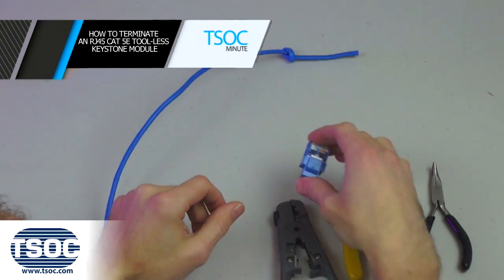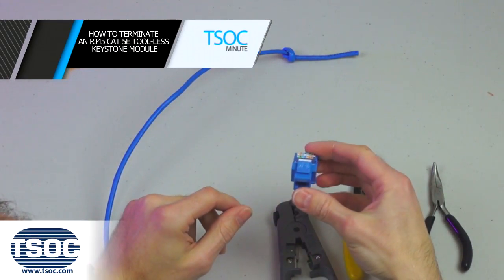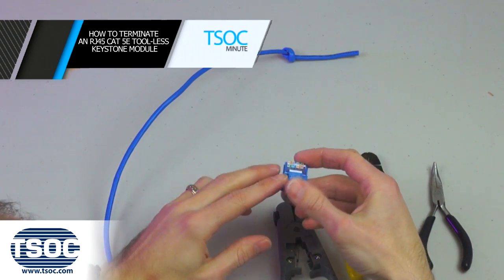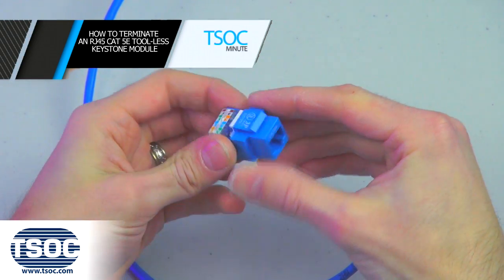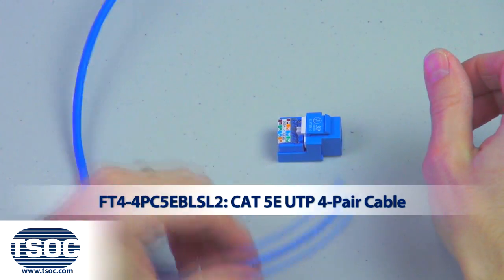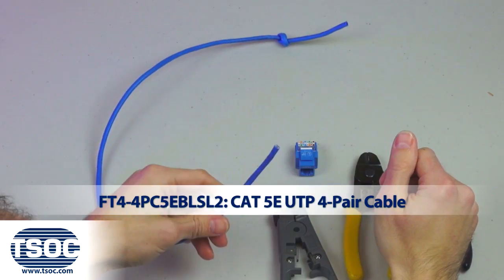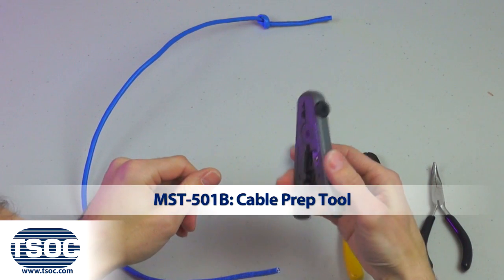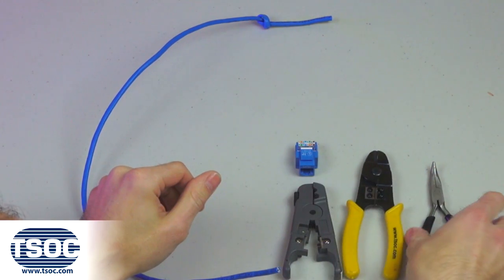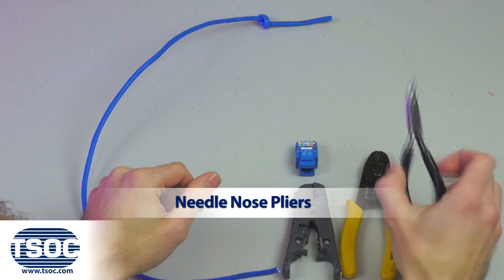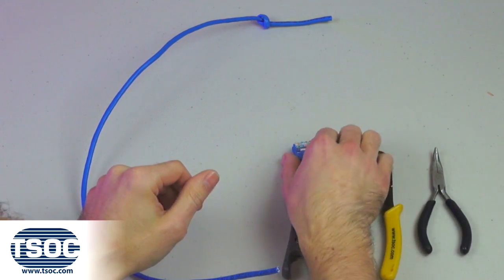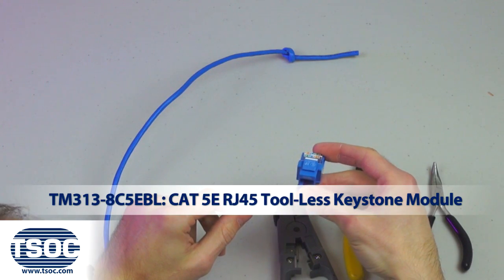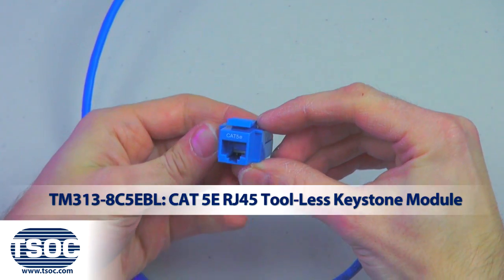How to terminate an RJ-45 CAT-5E Toolless Keystone Module. Materials Required: Cat-5E UTP 4-Pair Cable, Cable Prep Tool, Side Cutter, Needlenose Pliers, and the CAT-5E RJ-45 Toolless Keystone Module.